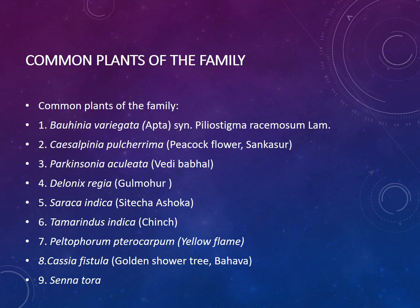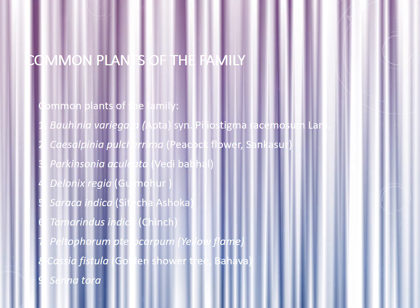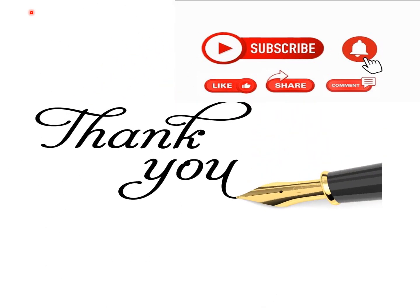Some common plants of this family are: Bauhinia variegata, Caesalpinia pulcherrima — commonly called peacock flower — Parkinsonia aculeata, Delonix regia or Gulmohar, Saraca indica or Ashoka, Tamarindus indica or Imli, Peltophorum pterocarpum or yellow flame, Cassia fistula or Amaltas, and Senna tora. Thank you so much for being with me. I hope the characteristic features, distribution pattern, classification, and economic importance of this family are clear to you. Thank you so much, and Allah Hafiz.